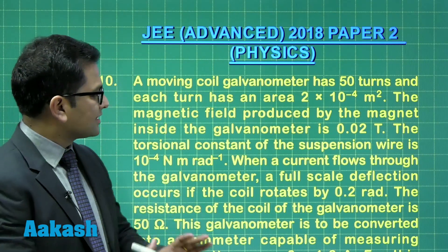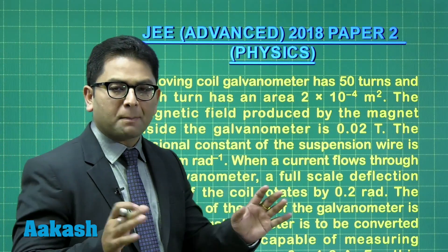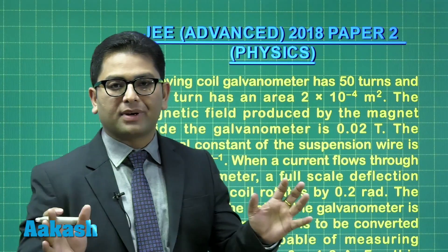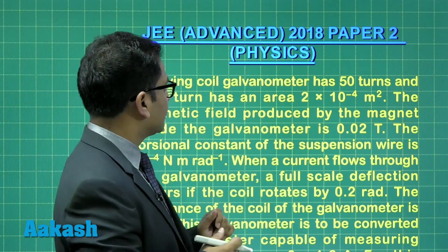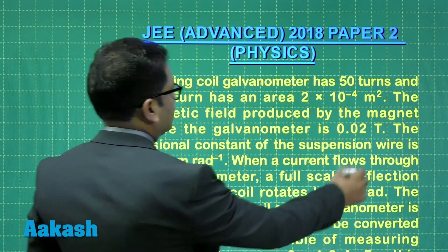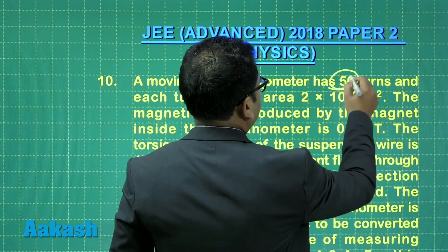Question number 10. This is a straightforward problem for those who have done these numericals and can easily proceed with this. A moving coil galvanometer has 50 turns, so the number of turns has been given.